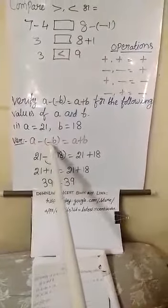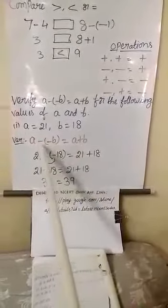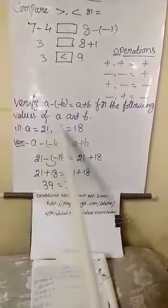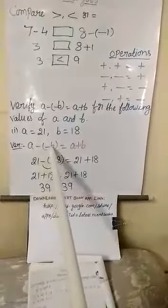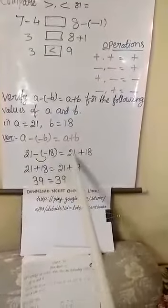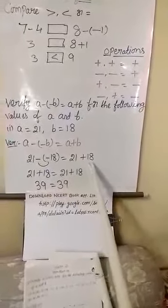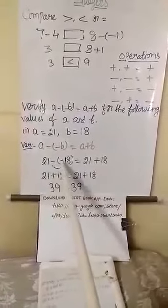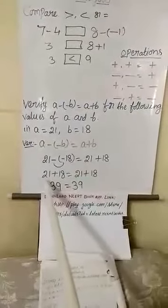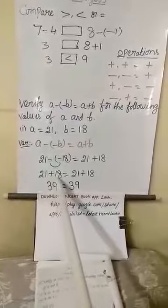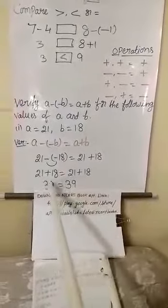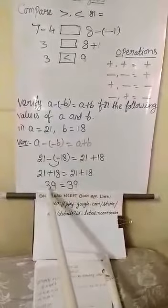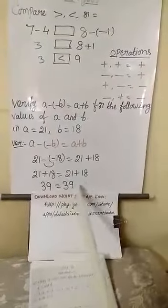A minus minus B equals to A plus B. A ki value hai 21, B ki value hai 18. Yahan pe minus minus B yani ki minus 18. A plus B, 21 plus 18. Minus into minus, plus. That is, 21 plus 18 equals to 21 plus 18. 21 plus 18 equals to 39, 39. That means we had verified this equation is true.